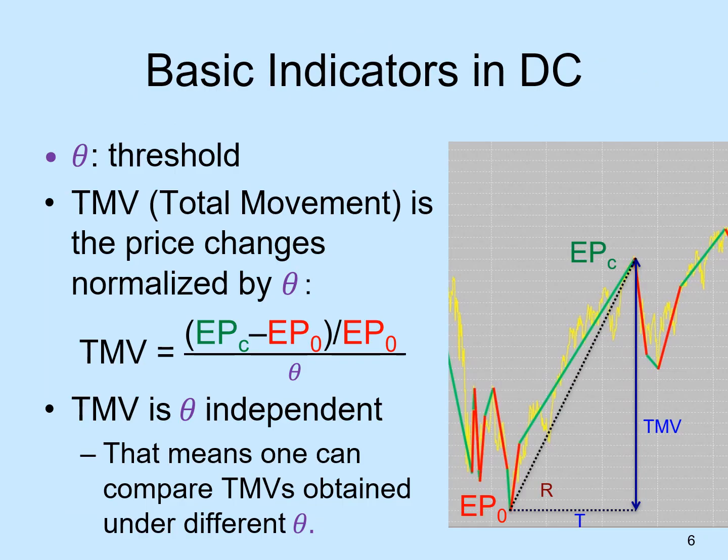To describe price movements in DC, we need to introduce a few indicators. First, we let theta be the threshold used in the observation. A DC chain begins with an extreme point EPO and ends when the price reverses at EPC. We have an indicator called total movement, or TMV, to measure the price movement between EPO and EPC. The price difference is EPC minus EPO. Dividing that difference by EPO gives the percentage change. We get the total movement by dividing the percentage by the threshold theta. This allows us to compare TMVs obtained under different thresholds, which is important to our work.